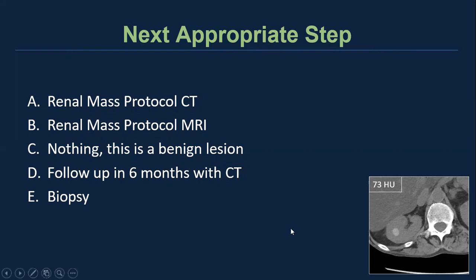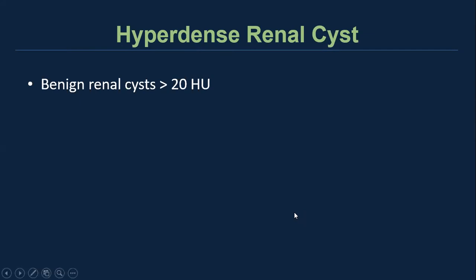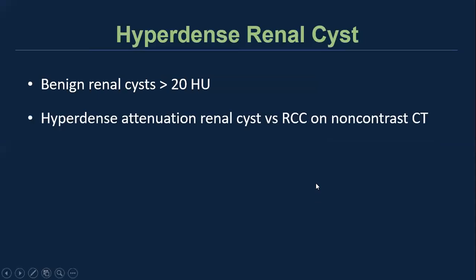The answer is C — we don't need to do anything because this is a benign lesion. This entity is called a hyperdense renal cyst. These are cysts which are benign, however, measuring greater than 20 Hounsfield units on non-contrast CT, most likely due to the presence of either proteinaceous or hemorrhagic material within the lumen.